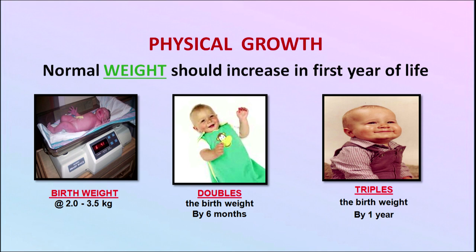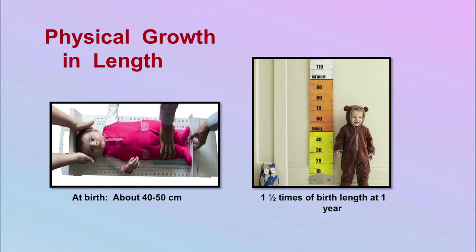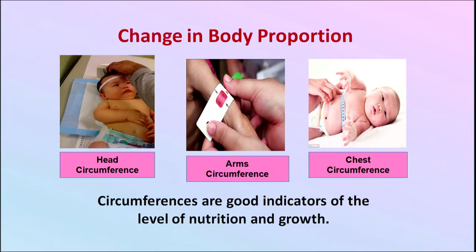When we talk about physical growth, normal weight should increase in the first year of life. Birth weight is around 2 to 3.5 kg, which doubles by 6 months and triples by one year of age. In terms of length, at birth the child is nearly 40 to 50 centimeters, and it is about one and a half times the birth length by one year of age. There are also changes in body proportion — head circumference, arm circumference, and chest circumference are good indicators of the level of nutrition and growth.